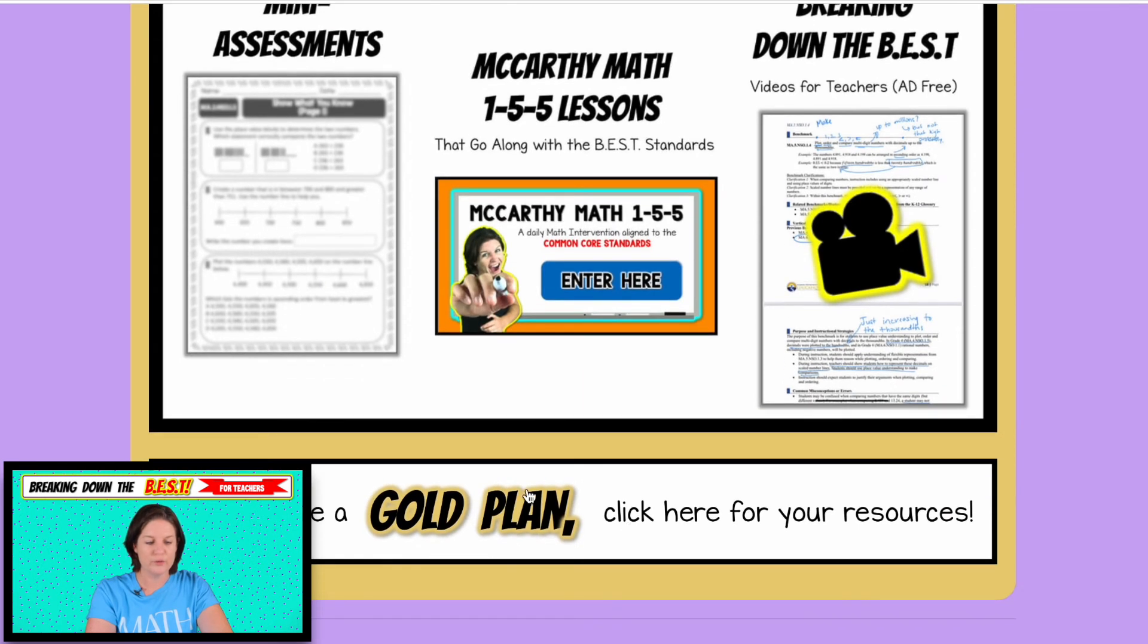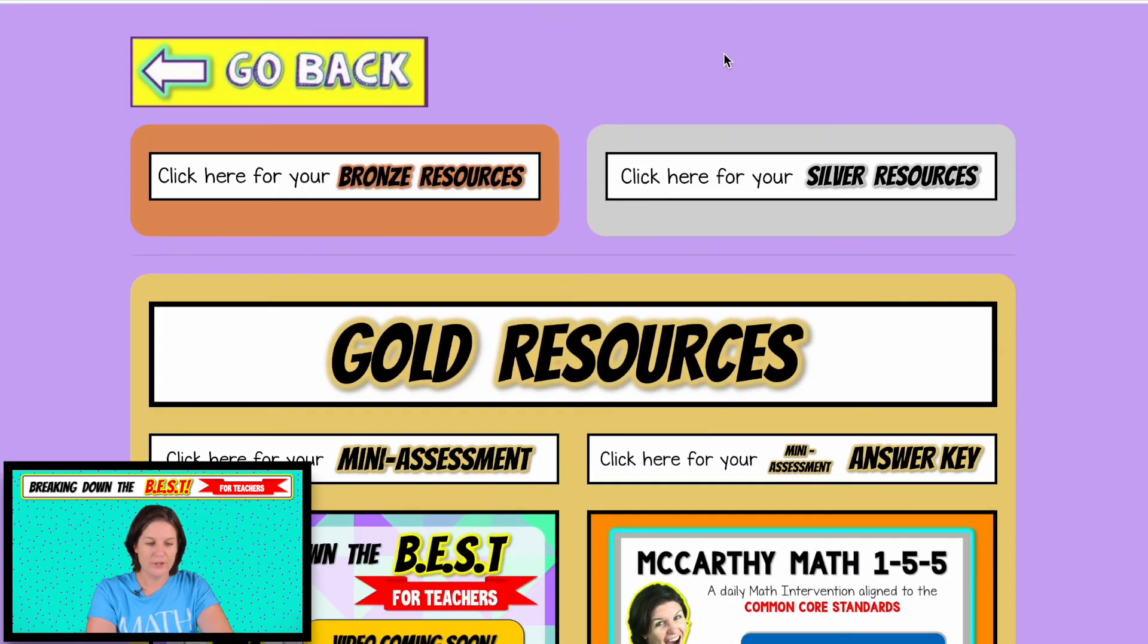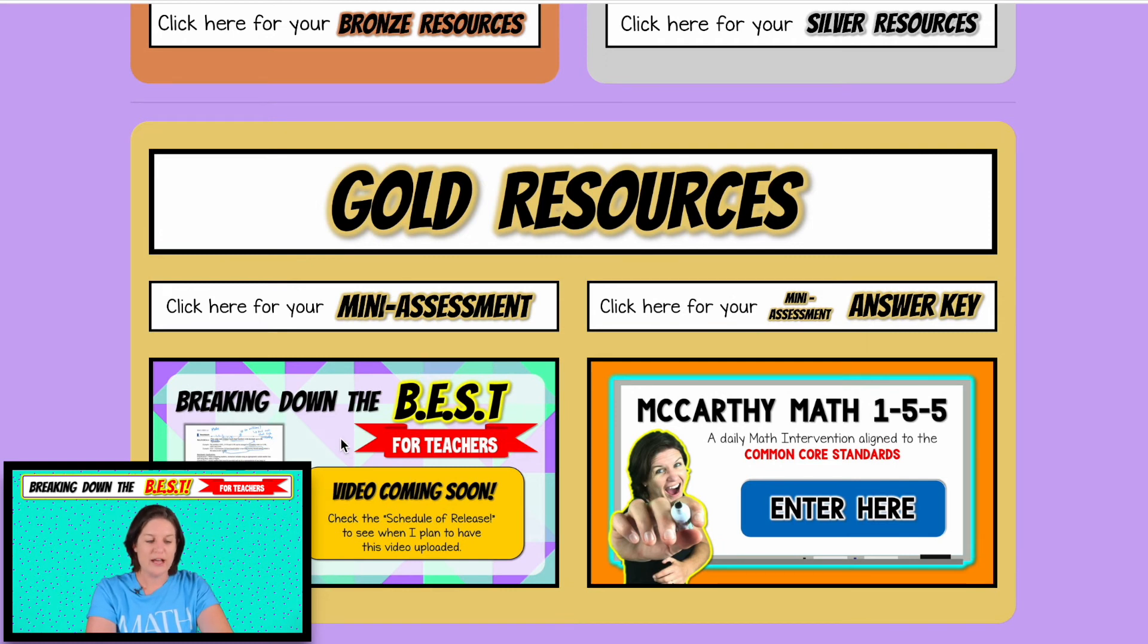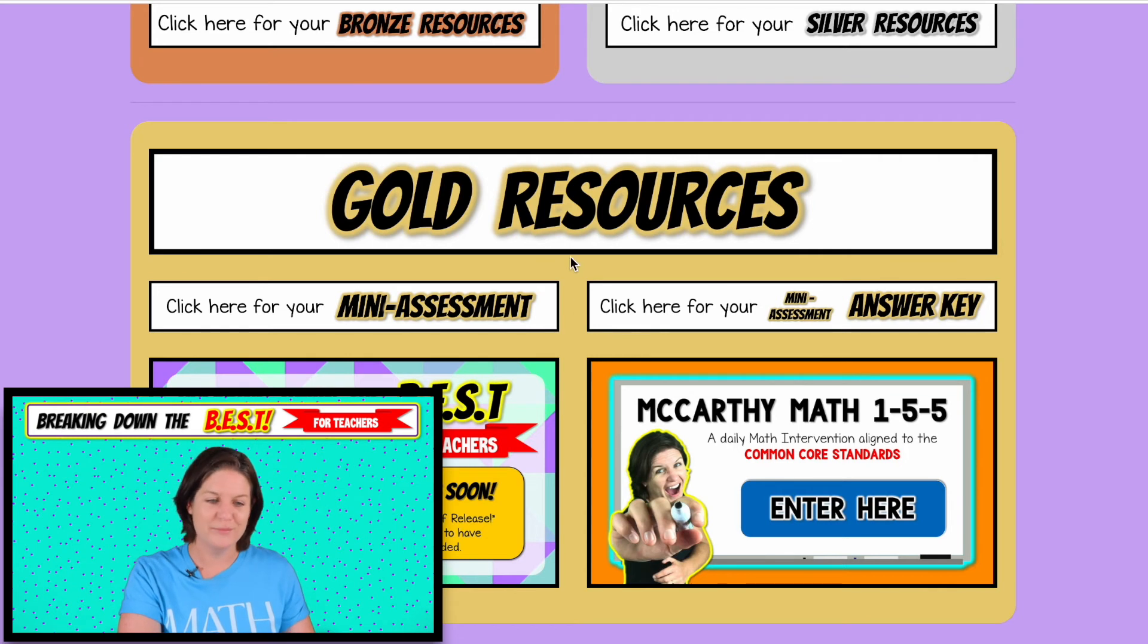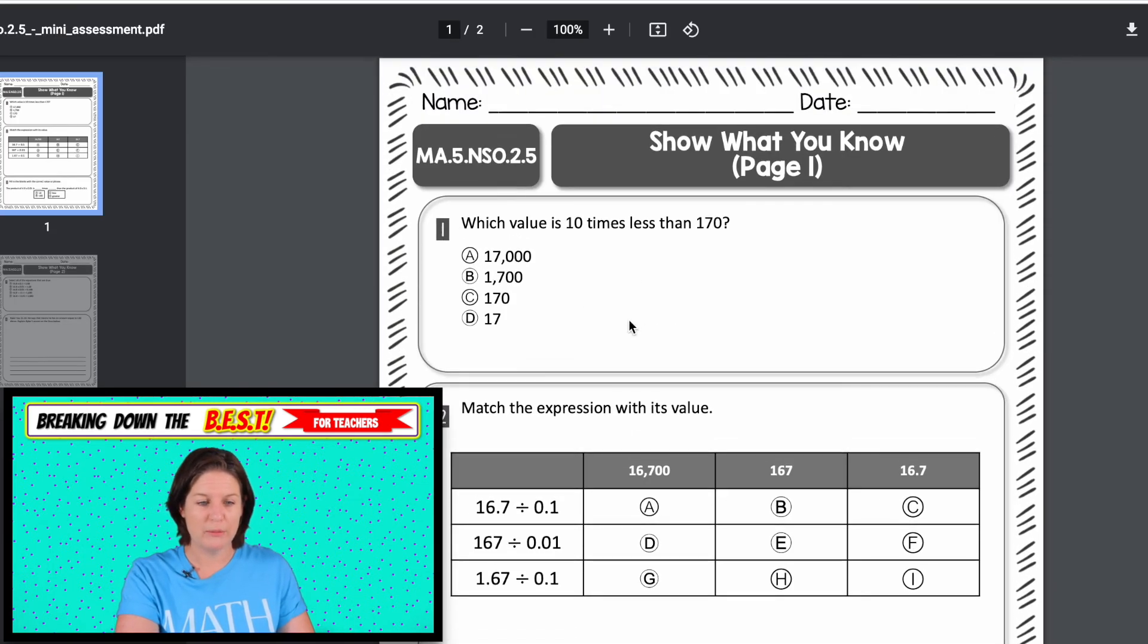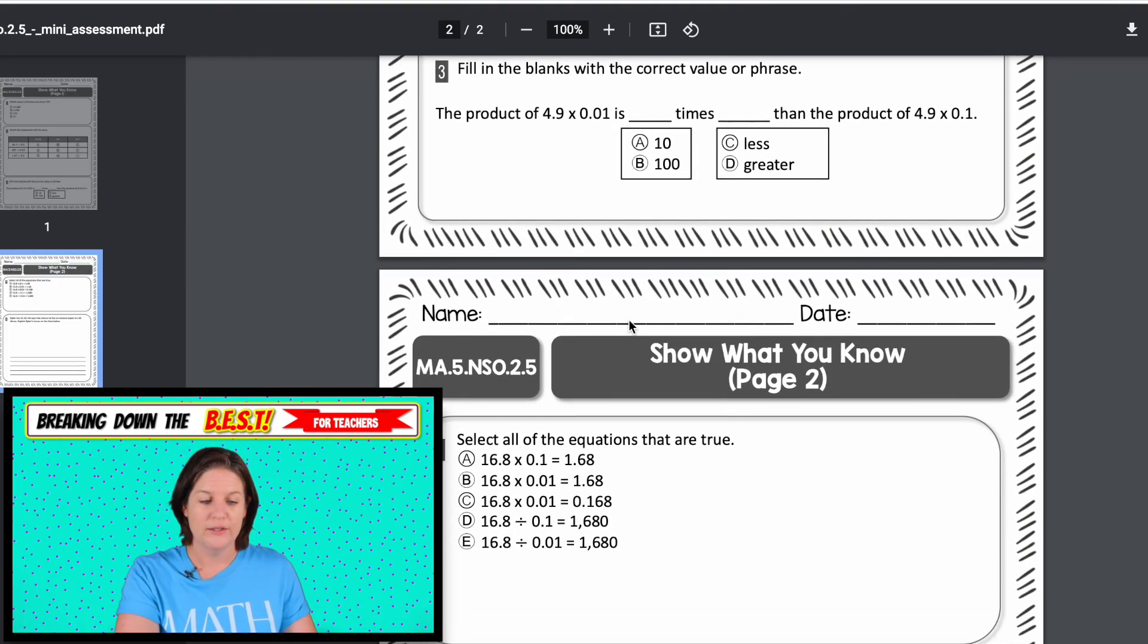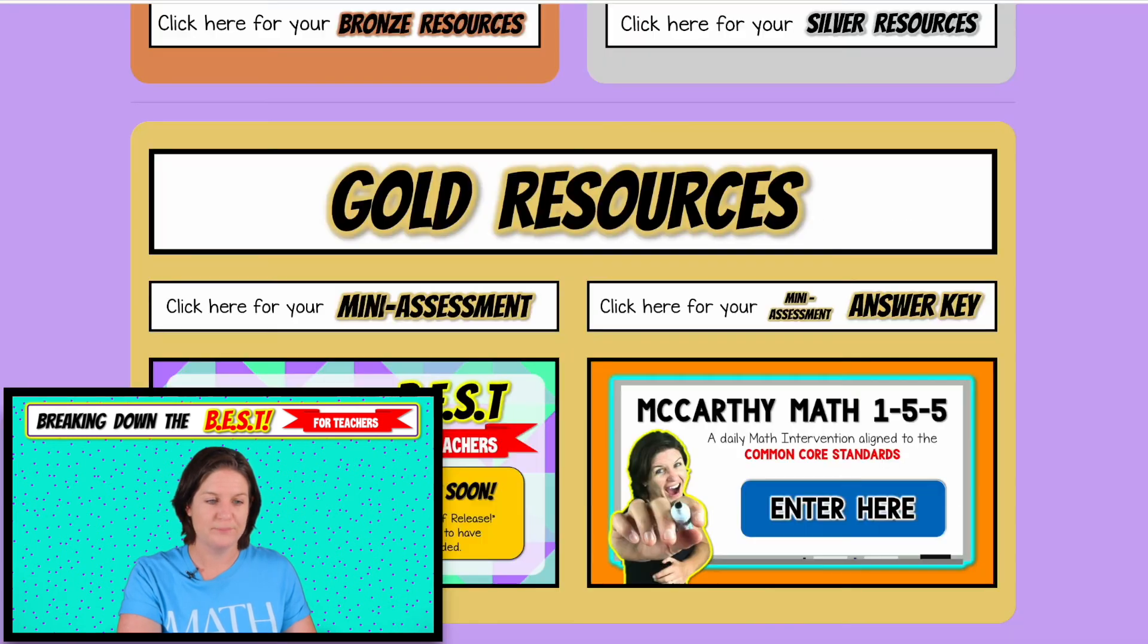And then let's go over the gold resources for those who have the gold membership. You can go back to the bronze video lessons or the silver extra printables at any time if you have the gold. And you do have access to this ad free version of breaking down the best. It's just one of the little perks of having a gold membership. But these videos are available on YouTube as well. The big ticket items of the gold resources include the mini assessment that you receive for each standard, which I know that you probably have many assessments that your district provides, but this just gives you a little bit of extra extra practice there. Okay. And then there's your mini assessment answer key.